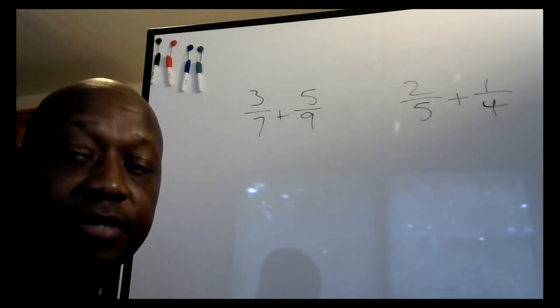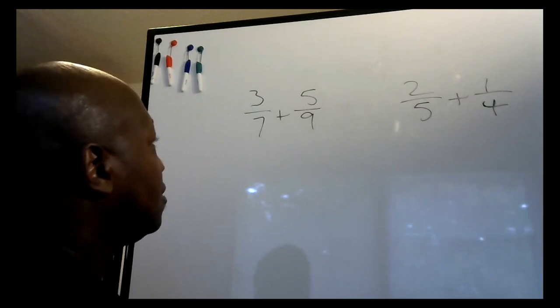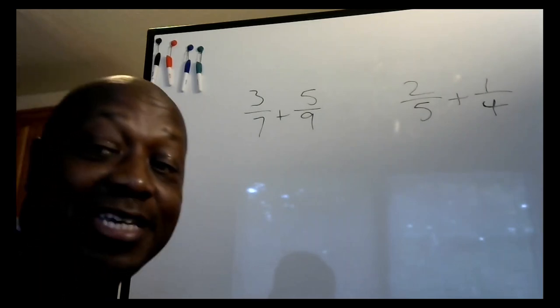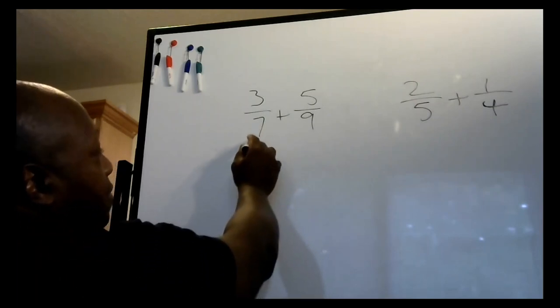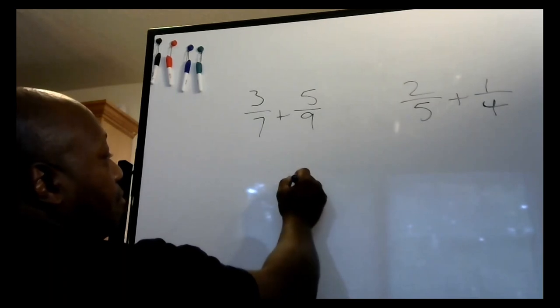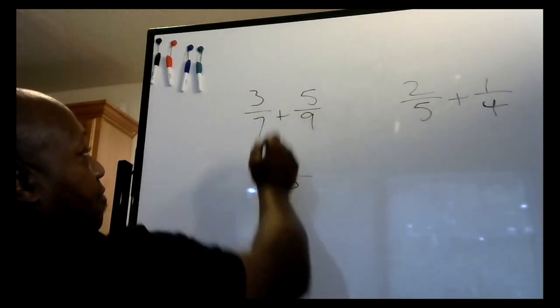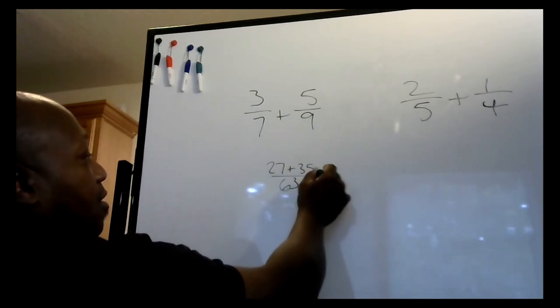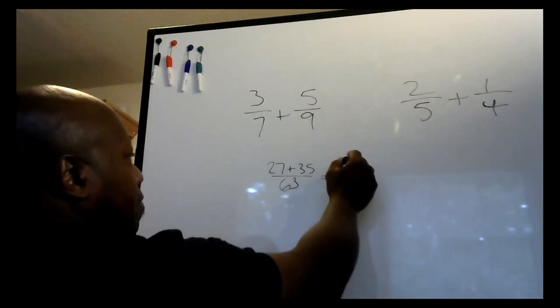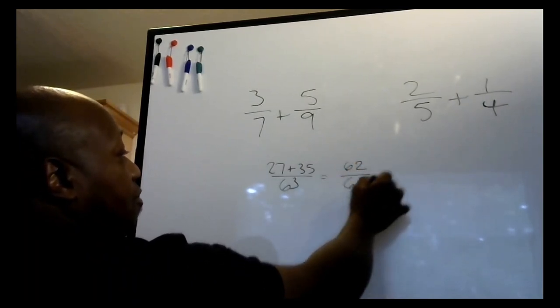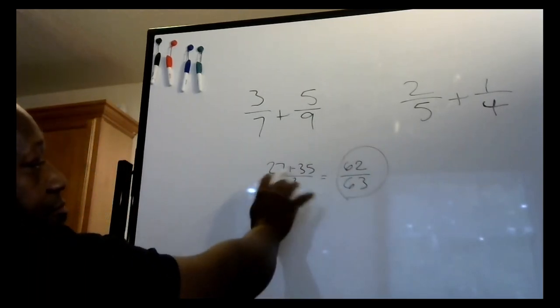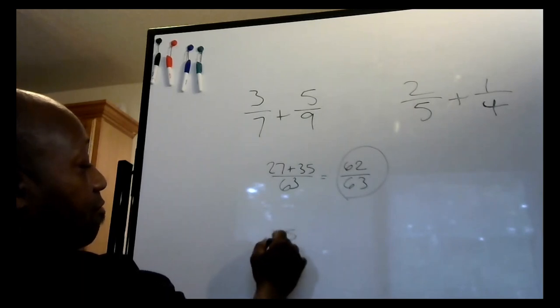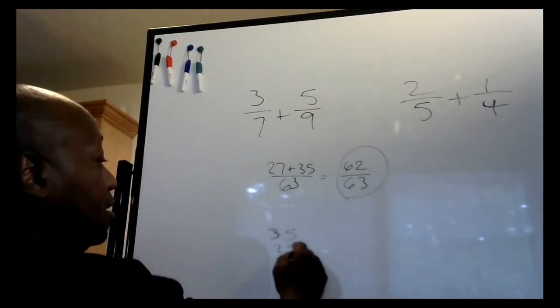Hopefully you got the answers that I get. Now let's do 3 over 7 plus 5 over 9. Seven times nine is 63. Cross multiply: nine times three is 27, and seven times five is 35. Twenty-seven plus 35 is 62, so 62 over 63 will be your final answer. Obviously most fifth graders might not be able to add that in your head, so you can stack it: 35 over 27. Seven plus five is twelve, carry the one. Three and one is four, four plus two is six.